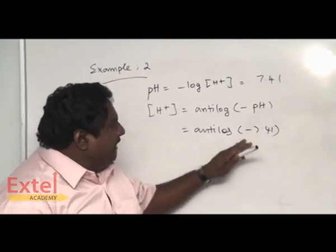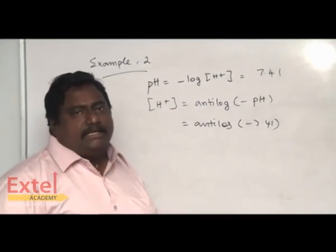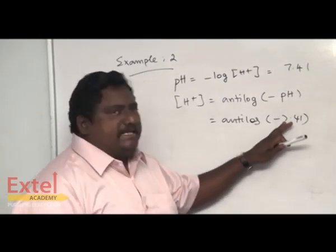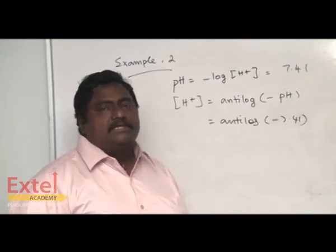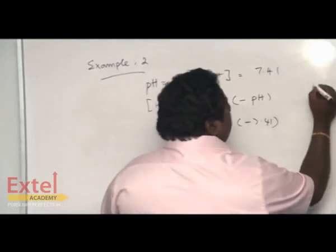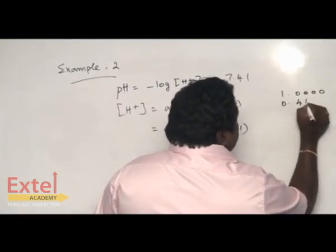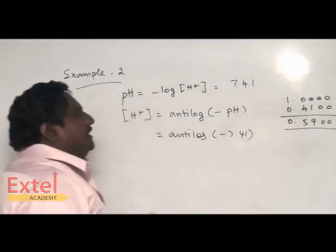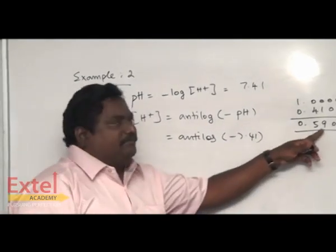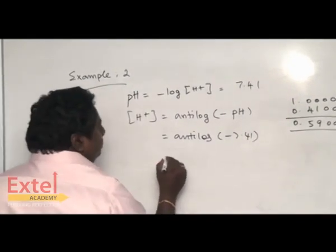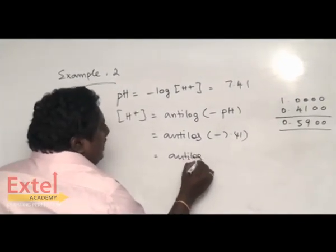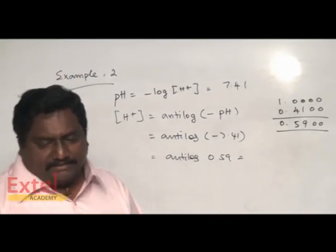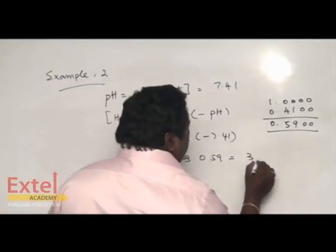You neglect minus and 7. What is remaining? 0.41. What is the first step? Neglect minus and 7. You take the remaining value 0.41, subtract this from 1, and you are getting 0.59. Now take antilog for 0.59. Antilog of 0.59 equal to 3.89.